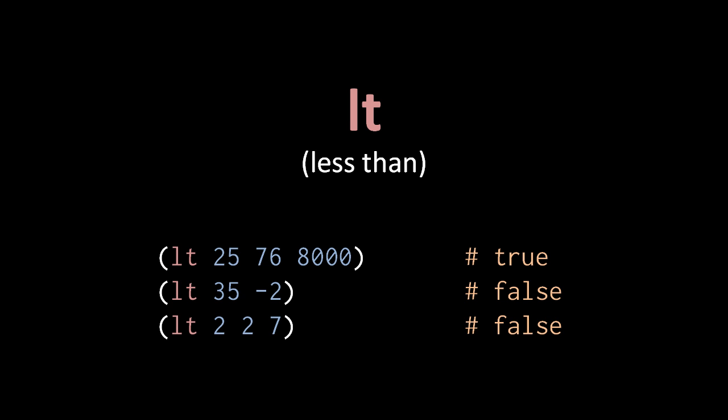So the first example here returns true because 25 is less than 76, and 76 is less than 8000. But then the second example returns false because 35 is not less than negative 2, and the third example also returns false because 2 is not less than 2.